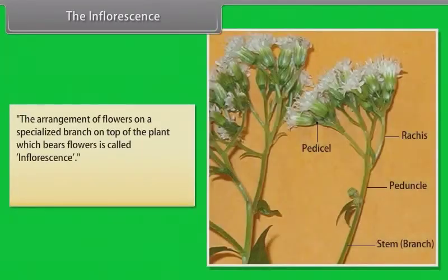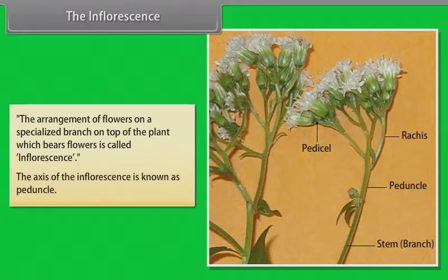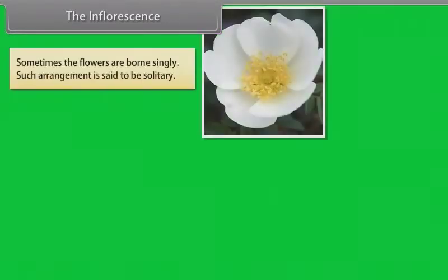The inflorescence is the arrangement of flowers on a specialized branch on top of the plant which bears flowers. The axis of inflorescence is known as peduncle. Sometimes the flowers are borne singly; such arrangement is said to be solitary.